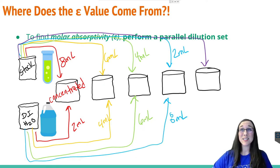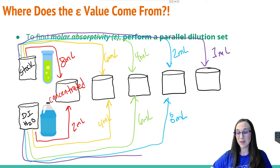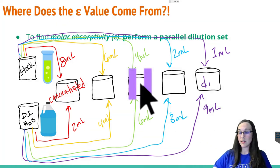And maybe the very last one is super dilute and we only have one milliliter of stock, but nine milliliters of water. That means that our last sample would be super diluted.